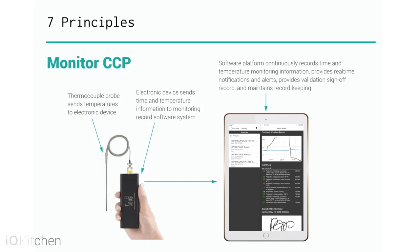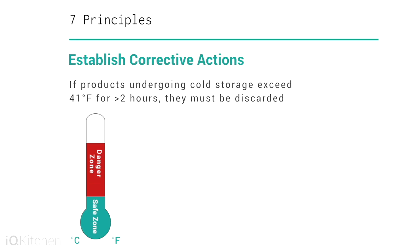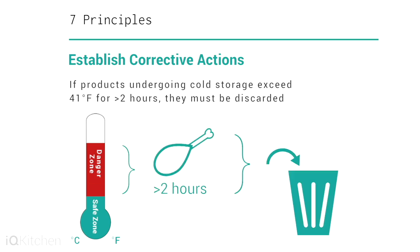Principle 4: Monitor CCP. The HACCP team will describe monitoring procedures for the measurement of the critical limit at each critical control point. Principle 5: Establish corrective action. Corrective actions are the procedures that are followed when a deviation in a critical limit occurs. An investigation must also be conducted to determine what caused the deviation and how to prevent recurrence.